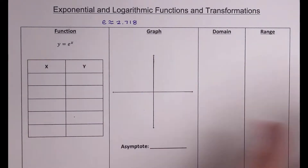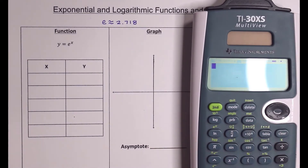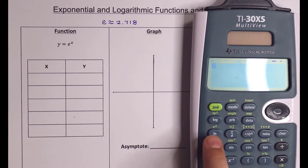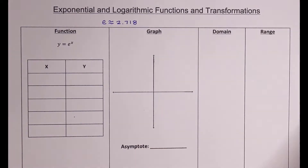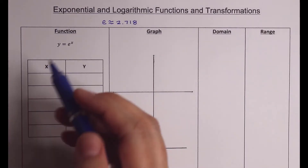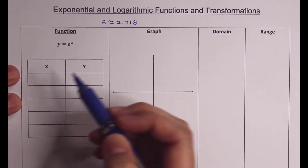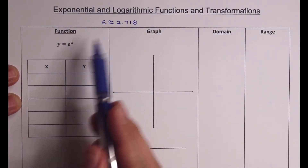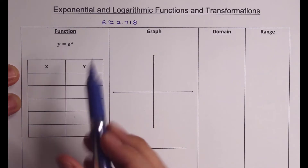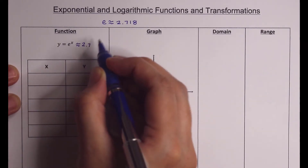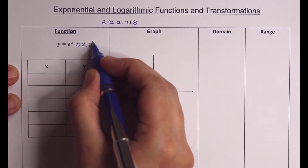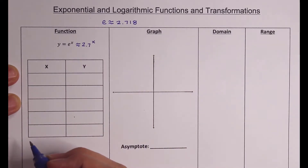If you've never dealt with that button on your calculator before, e is right there as a button. So e to the first power is about 2.718 — that's the natural exponential number. So I'm going to graph this function: 2.718, or roughly 2.7, to the x power.